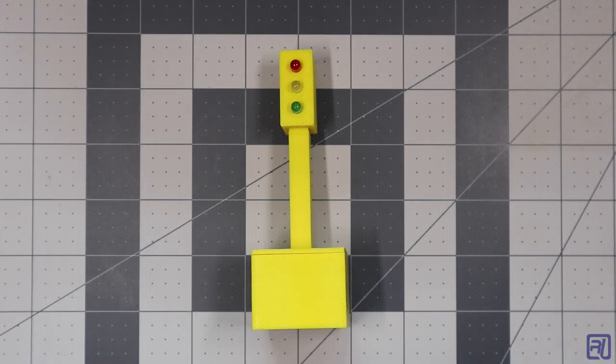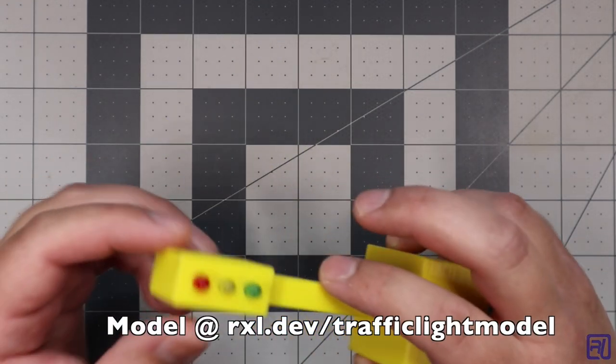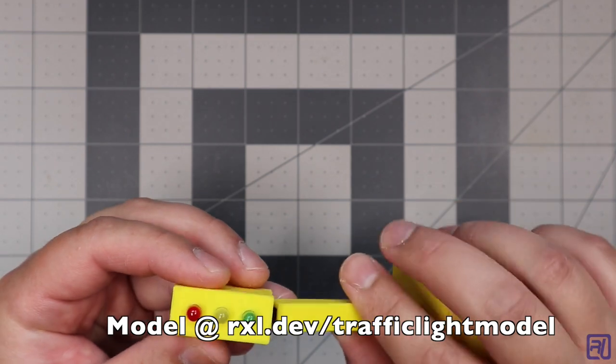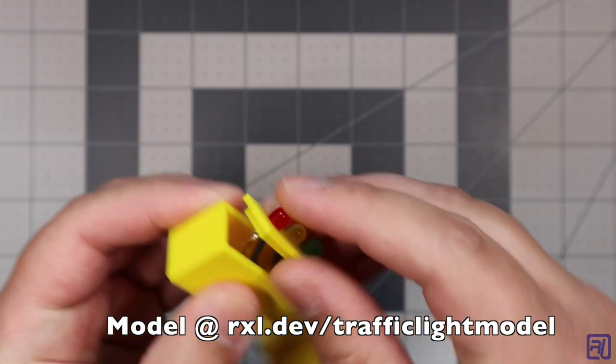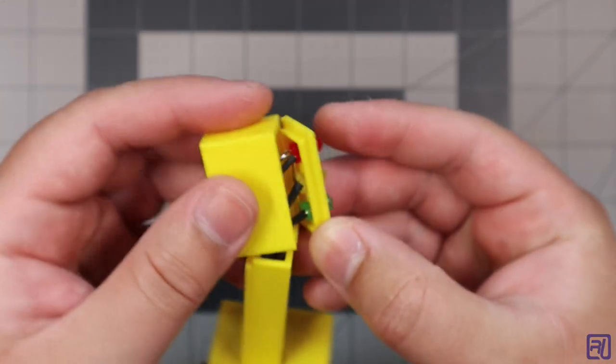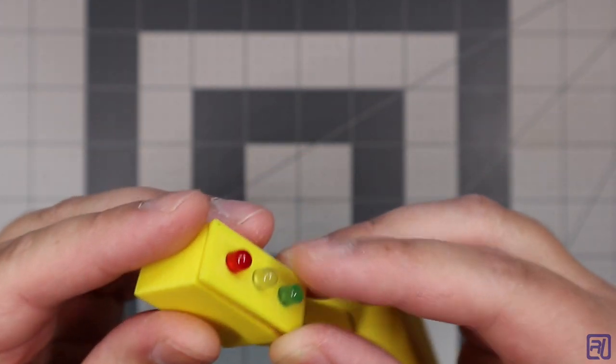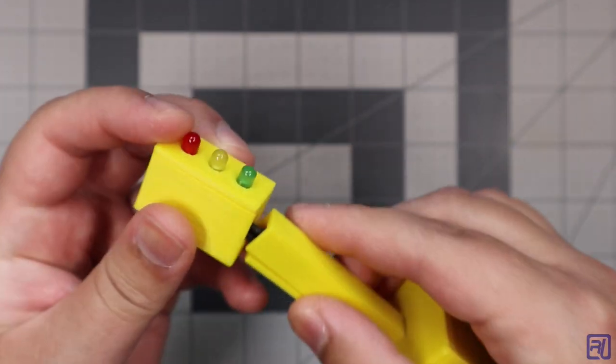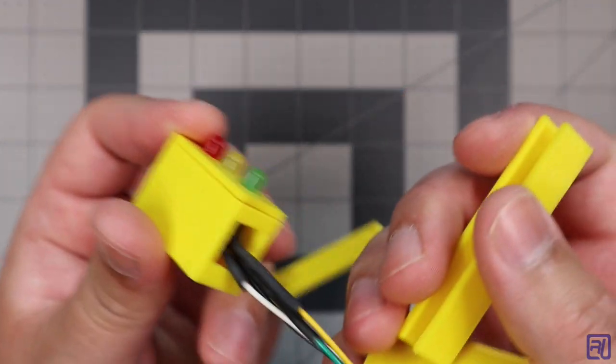The traffic light model is made up of six different pieces that all snap together. The top section houses the LEDs. It has a front plate that snaps off with three holes for the five millimeter LEDs. This snaps into this housing, which has a hole for the wiring to go through.